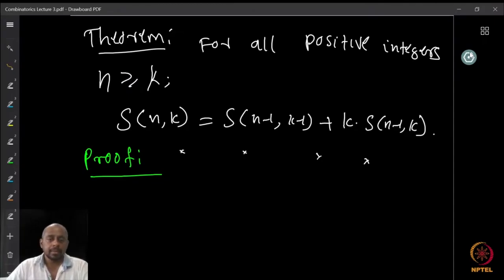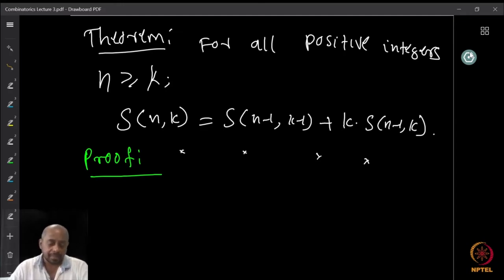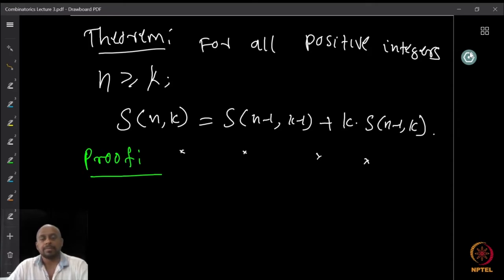Welcome back. In the previous lecture we were looking at recursions and we defined S(n,k), the Stirling number of the second kind, to be a number that counts the number of partitions of an n-element set into exactly k blocks. At the end of the lecture we asked you to try to prove the following recursion formula: S(n,k) = S(n-1, k-1) + k·S(n-1, k). We are going to see a proof now.